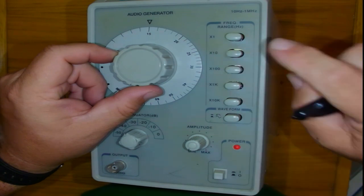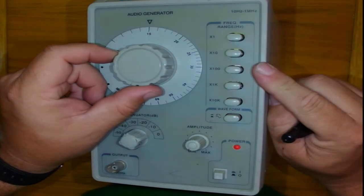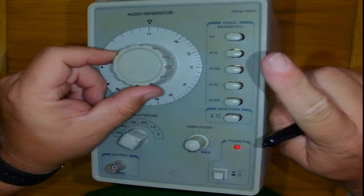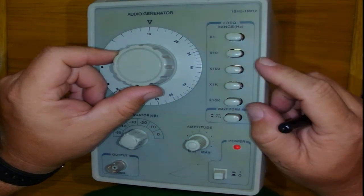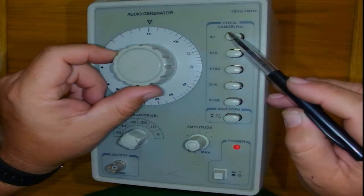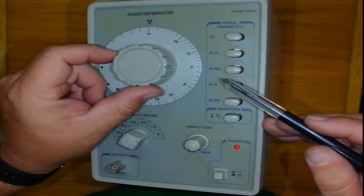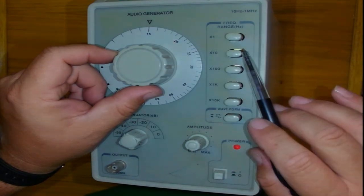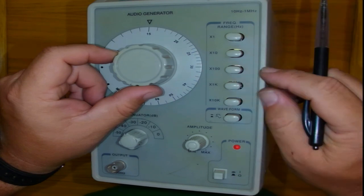15 times 1 is 15. 15 times 10 is 150. So 15 times whatever the selector is here will give me my resulting frequency. So the range dial plus the range scale gives me my result.